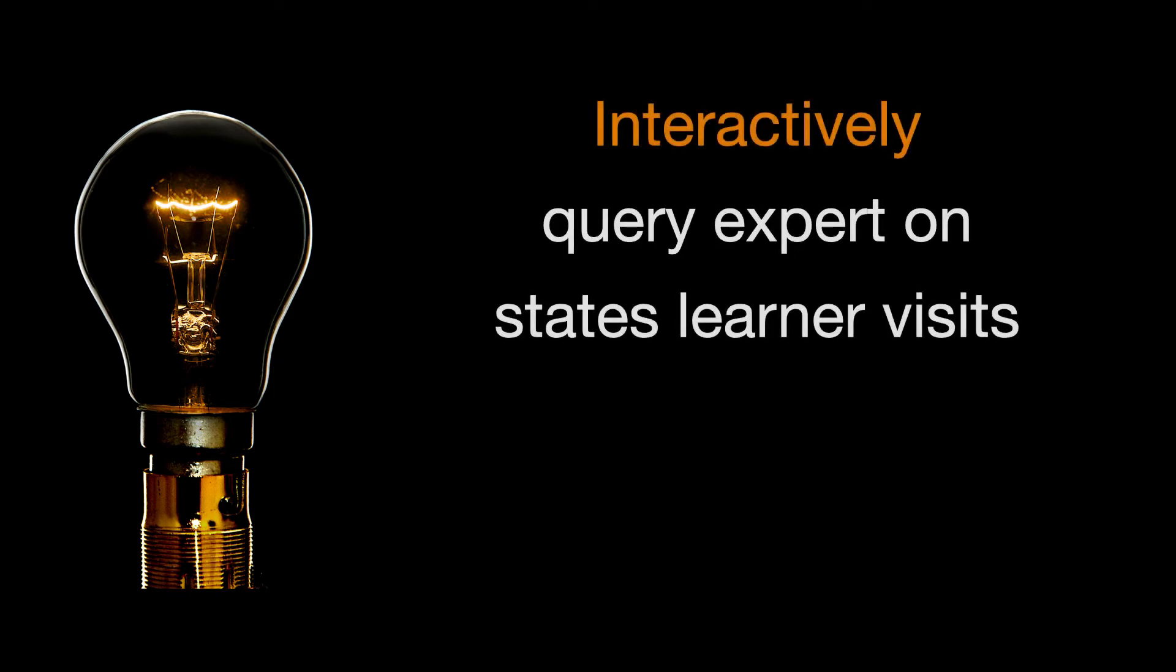Okay, so feedback drives covariate shift. And we can't get rid of feedback, so we must get rid of covariate shift. How? If only we could ask the human what they would do in situations the robot gets into. The key insight is, we can, by interactively querying the expert on states the learner visits. By doing this in a clever way, we can make the training distribution look really similar to the test distribution, thus bringing back all the wonderful guarantees of machine learning. How do we do this?